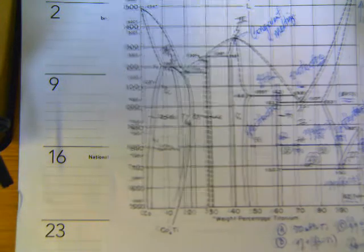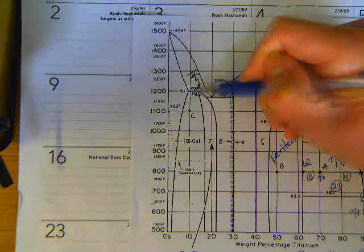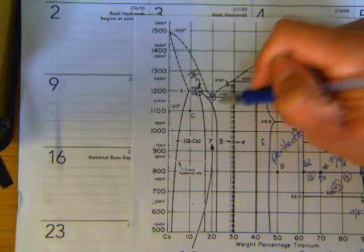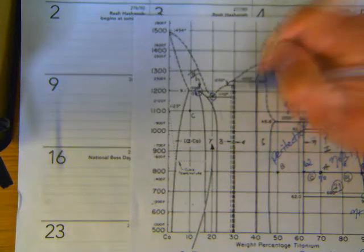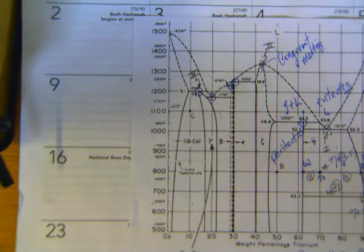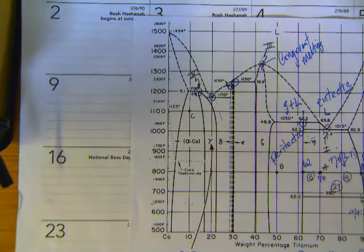And there are no peritectoids on this system. We have additional peritectics here at the top of the gamma region. There's another eutectic in this V. This is a two-phase region down here, liquid above. And peritectics here and there. Okay, so it's a fairly busy diagram, a bunch of invariant points, and worth looking at. Alright, so I hope that helps.